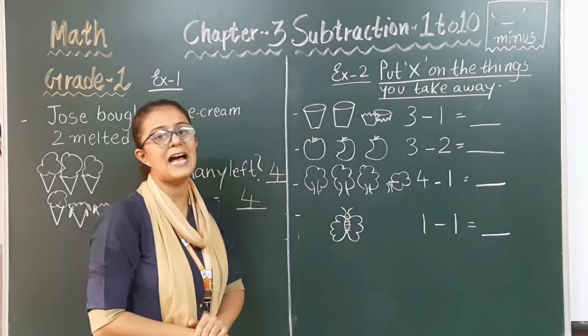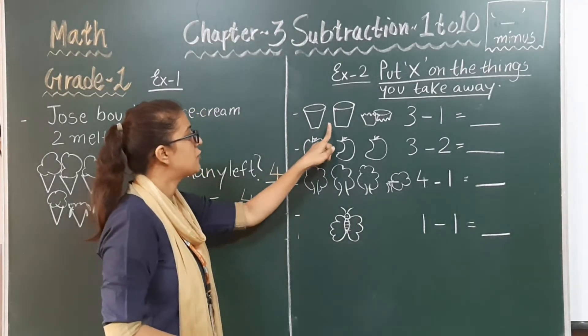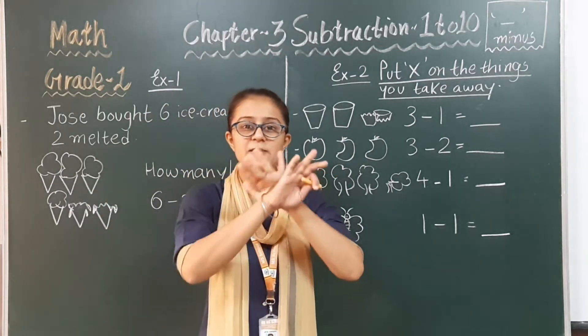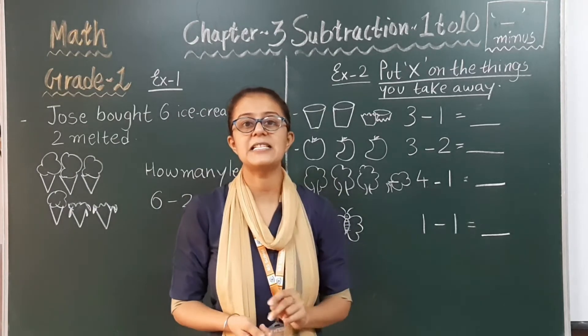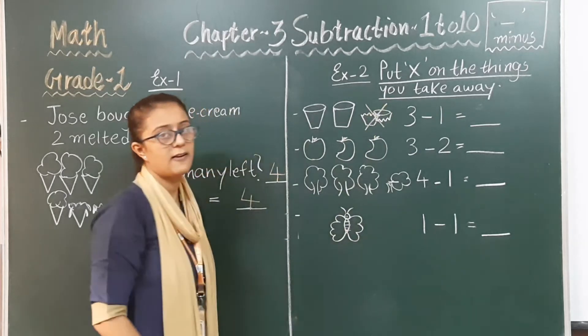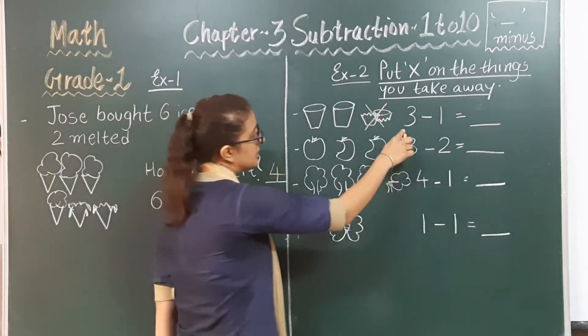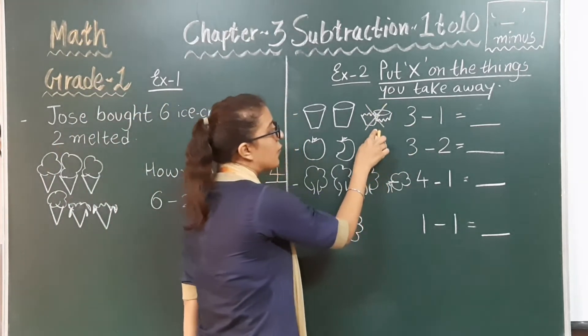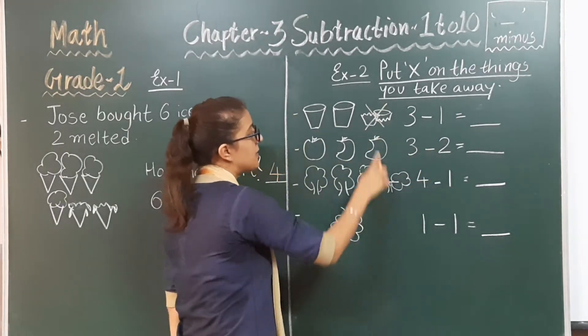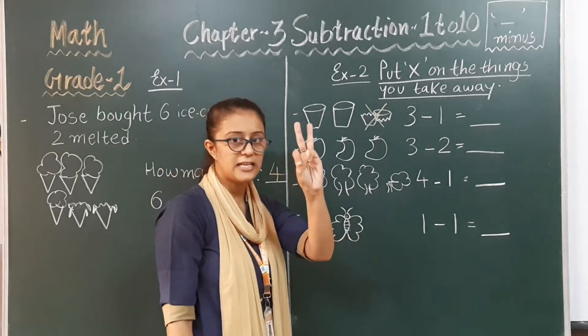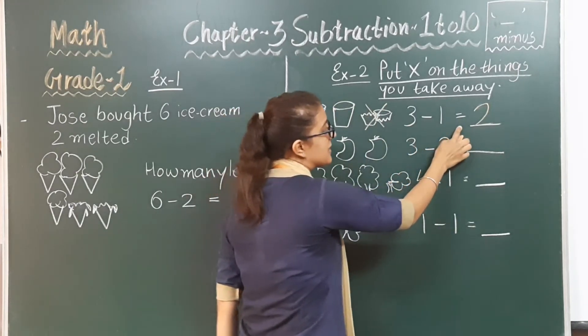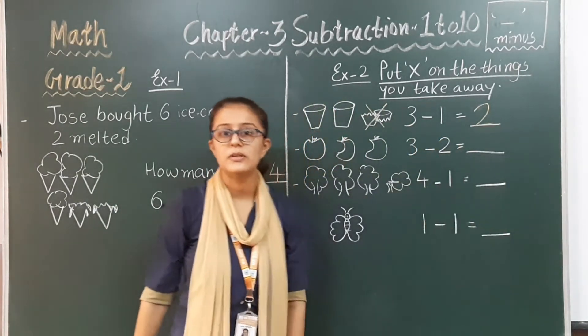There is a picture of glasses given to you. One, two, three glasses. But from that three glasses, one glass has been broken. A glass which has broken, we have to remove it. So three take away one is two. Three minus one equals to two.